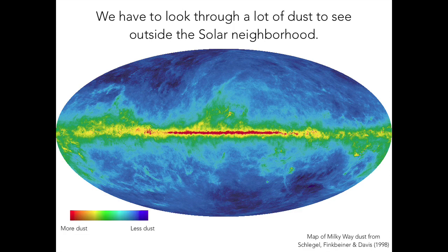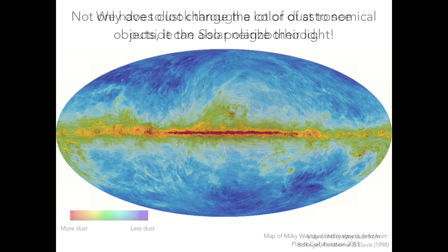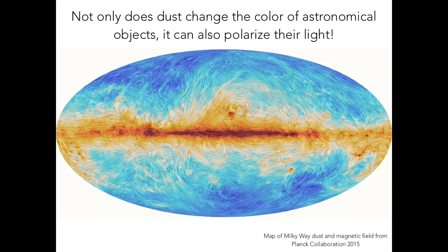Sometimes it's a surprise — there are wavelengths where you don't think dust plays a huge role, where it really does. One example is for people who study the cosmic microwave background radiation, the remnant of radiation from the Big Bang. Not only does dust block light, but when it emits light, it emits polarized light. This is a map made by the Planck satellite — in color you see where there is dust, and all the swirly lines show the magnetic field throughout the interstellar medium. The emission from dust is polarized along this magnetic field direction. This has to be taken into account even when studying the cosmic microwave background.